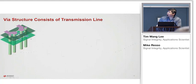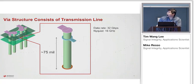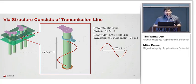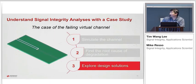Here's a via structure that I simulated — it actually consists of transmission lines. If I take a look at the stub, it's about 75 mils. Doing the math given the data rate and Nyquist, taking five times the bandwidth and using six inches per nanosecond as the propagation velocity in FR4, the wavelength is about 75 mils. That means the entire wavelength fits into that stub, and by definition, when voltage and current are changing with physical length, that is the definition of a transmission line.